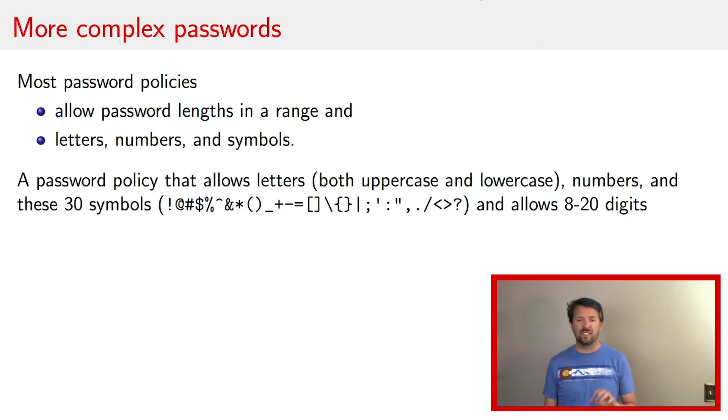And usually they allow more than just uppercase and lowercase letters. They allow numbers and they allow some set of symbols. So as an example, suppose that there's a policy that says, hey, you can have a password that has uppercase and lowercase letters, as well as numbers, and this set of symbols, which happens to be 30 of them. And the password length can be anywhere from, say, 8 to 20. Well, how do we determine how many passwords are in this policy? And the way to break this down is to say, all right, well, the password policy can be anywhere from 8 to 20. So we can figure out how many passwords of length 8 there are, then how many of length 9, then how many of length 10, and so forth, all the way up to 20.